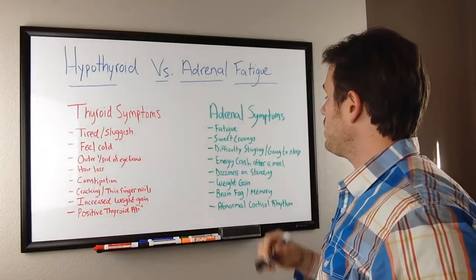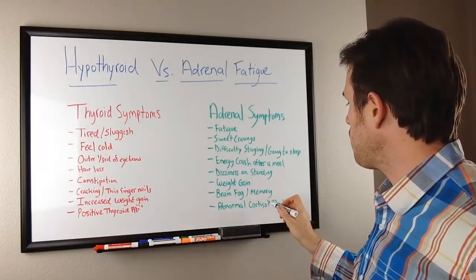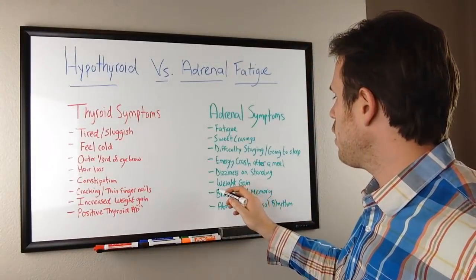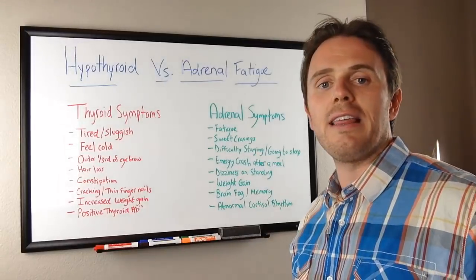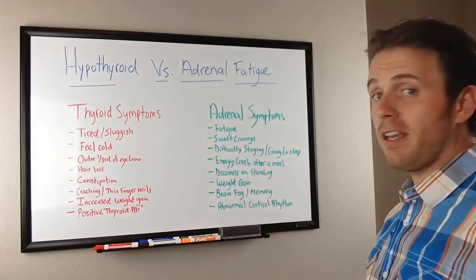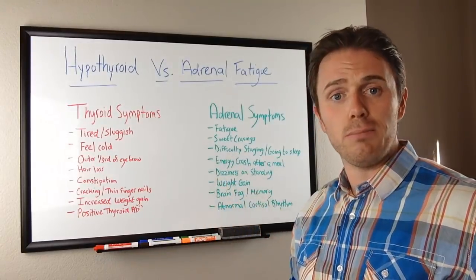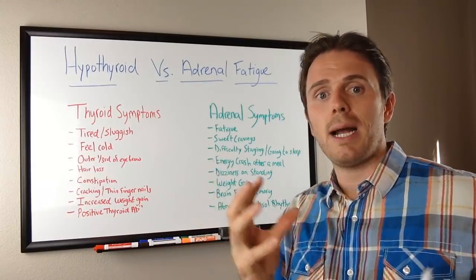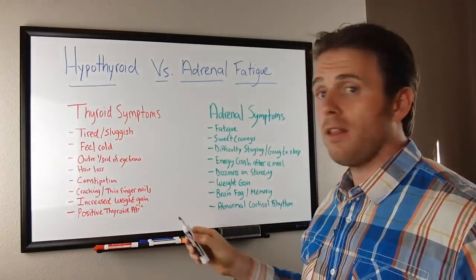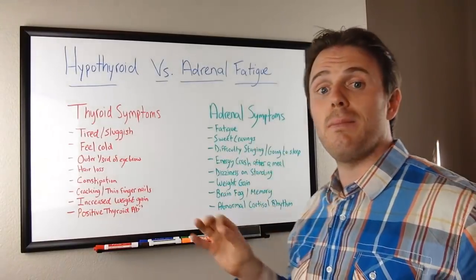Take a look at the adrenal symptoms. If you have an abnormal cortisol rhythm test, give yourself plus five points, and give yourself plus one for anything else. If you have five or more points, I would consider you to have an adrenal issue. So this gives everyone a chance to look at their symptoms and track them back to their system dysfunction: five or more on the thyroid means a thyroid issue; five or more on the adrenal means an adrenal issue.